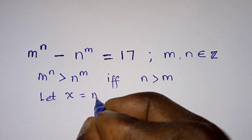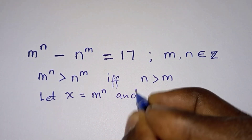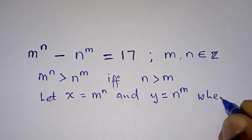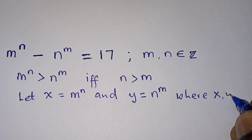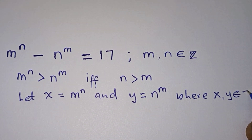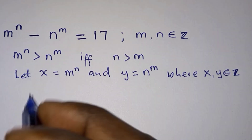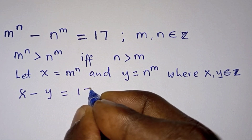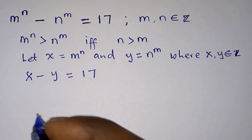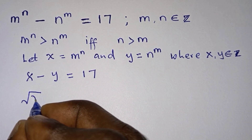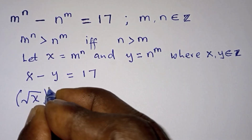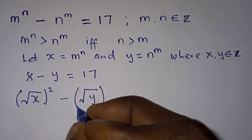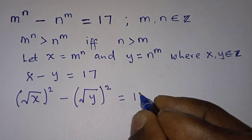Now let's go ahead and let x equal to m to the power n, and y equal to n to the power m, where x and y are also integers. So the equation now becomes x minus y is equal to 17. This can be written as the square root of x squared minus the square root of y squared, which is equal to 17.